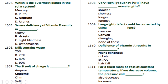Very high frequency (VHF) waves have — correct option A — shorter wavelengths. Long-sightedness defect could be corrected by using — correct option B — a convex lens.